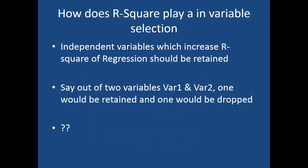The next question is: how does R-squared play a role in variable selection? You always add the independent variables which increase R-squared of the regression. Any independent variable which increases R-squared of the regression model should be retained. If a variable is not increasing R-squared and it is not very important, you should think of dropping it. If the variable is important for explaining the problem statement, keep it; otherwise drop it, especially if you have too many variables.